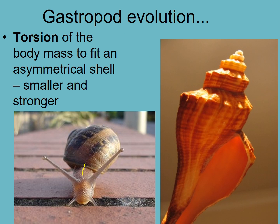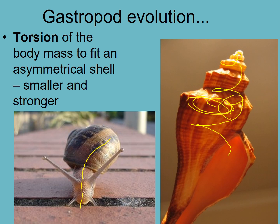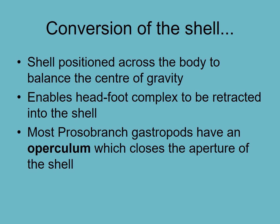With modern snails we see bilateral symmetry and a non-planospiral shell where it goes up. In this case we spiral it around onto ourself in an asymmetrical pattern. And what this allows it to do is give a geometry that allows the animal to get larger, but also use the old structure in order to make itself stronger and more crush-resistant. That's called torsion. And you'll see the shell positioned across the body to balance the center of gravity, as we saw in the last image.